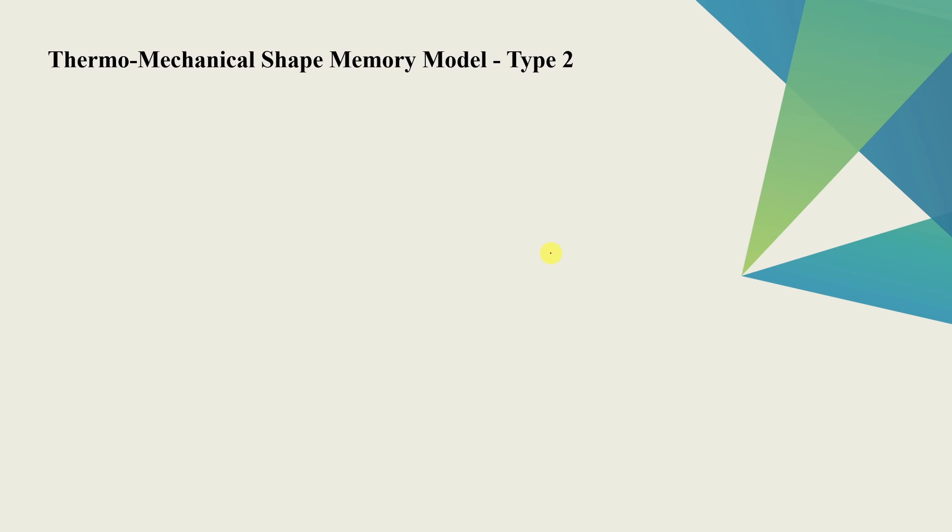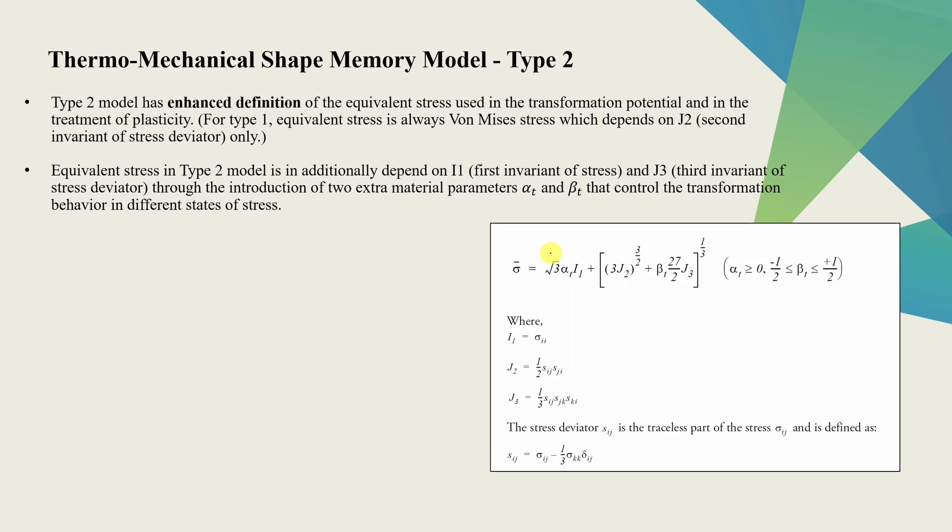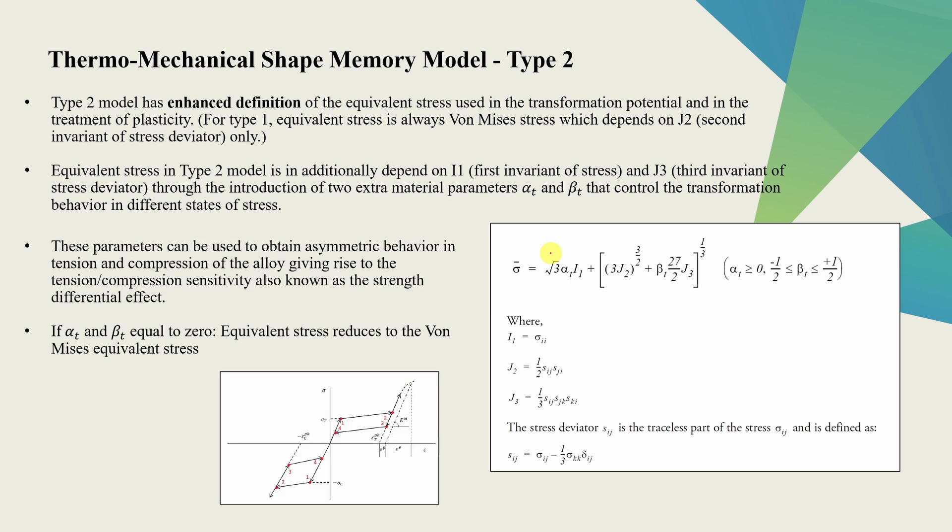I think we already talked a lot about material model. So I will not go into this thermomechanical type 2 model. I will just mention couple of things here. Type 2 model is very similar to type 1. Whatever we talked till now, everything holds. The only difference is in type 2 model, you have multiple options for plasticity definition. In type 1, there is only one option available. And also in type 2 model, you can define these parameters alpha t and beta t using which you can model asymmetric tension compression behavior. Because for some SMAs, their behavior in tension and compression will be little bit different.